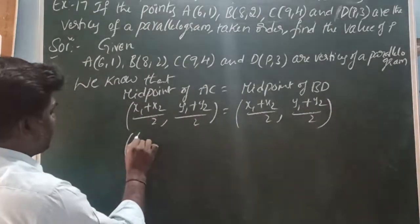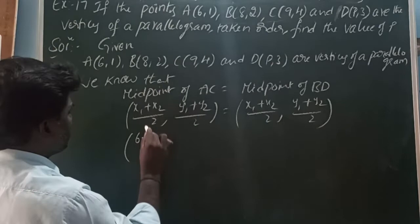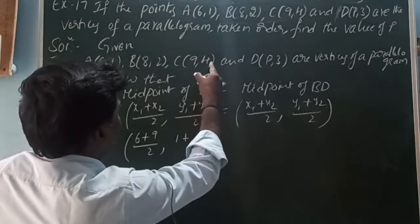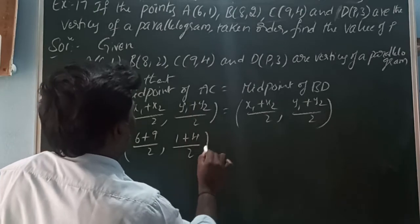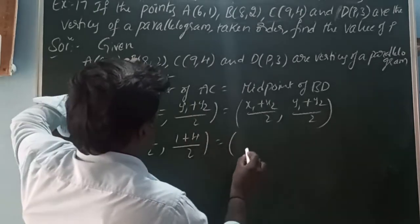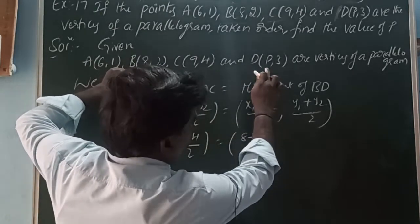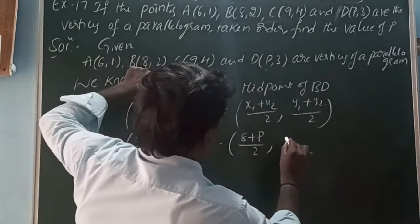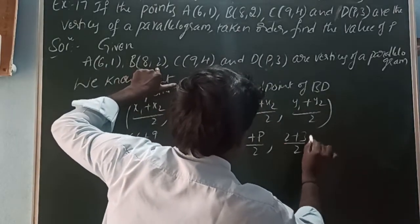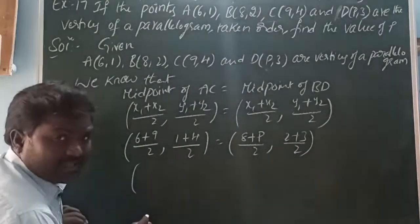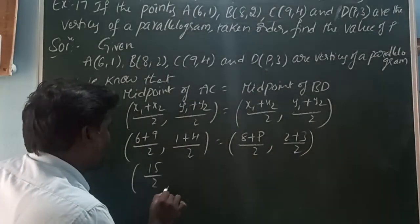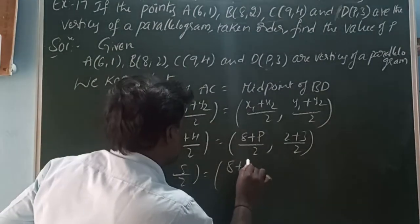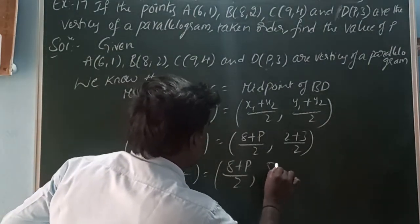For AC: x1 is 6, x2 is 9, y1 is 1, y2 is 4 — giving (6+9)/2 = 15/2 and (1+4)/2 = 5/2. For BD: x1 is 8, x2 is P, y1 is 2, y2 is 3 — giving (8+P)/2 and (2+3)/2 = 5/2.